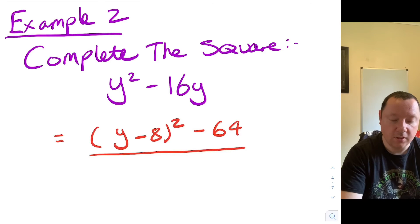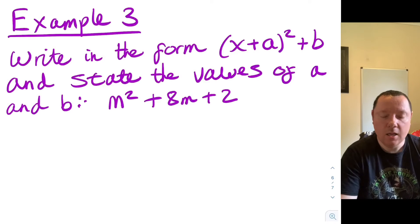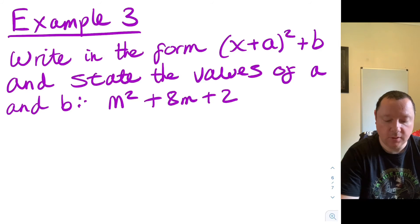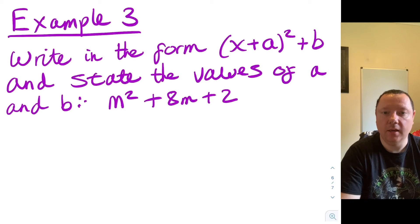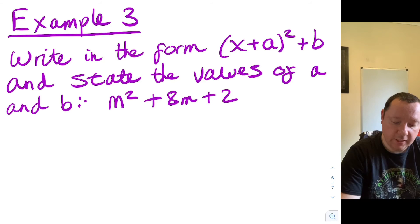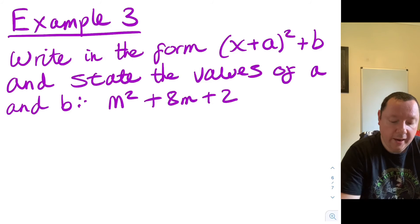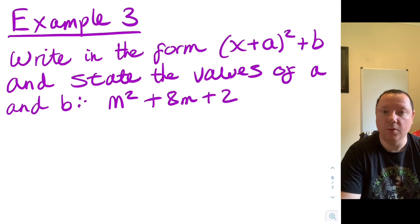Let's look at an example where there is a number at the end, also worded in a slightly different way. Example three says write in the form x plus a, all squared, plus b, and state the values of a and b, for m squared plus 8m plus 2. This is just asking you to complete the square in a different way — x plus a squared plus b is the format of completing the square. So whenever you see x plus anything squared plus anything, that's just asking you to complete the square.